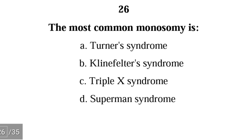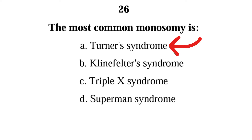Number twenty-six: the most common monosomy is — Turner's syndrome, Klinefelter syndrome, triple X syndrome, or Superman syndrome. The correct answer is A, Turner's syndrome. Turner's syndrome is the most common monosomy and happens when an individual has only one chromosome 23 instead of the normal two, giving them 45 chromosomes instead of the normal 46.